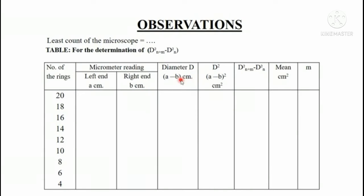When we subtract a to b, the difference of a and b will give the diameter of that particular ring. In this way we will find out the diameter of almost all the rings.